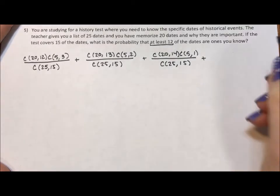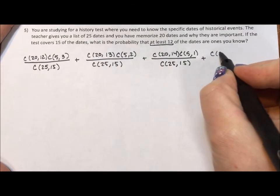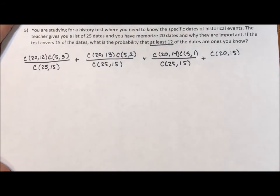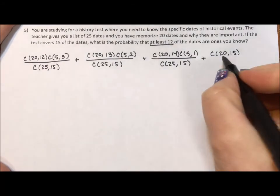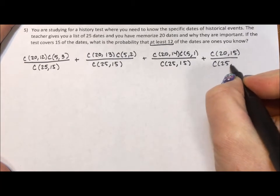And then the best scenario for you is the combination of 20 taken 15 at a time. You know every one of those 15. You studied the right ones divided by the combination of 25 taken 15.